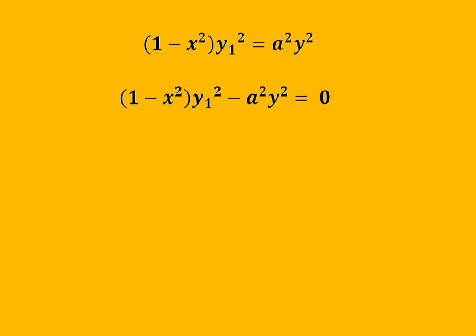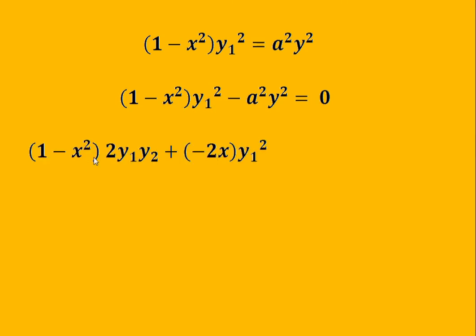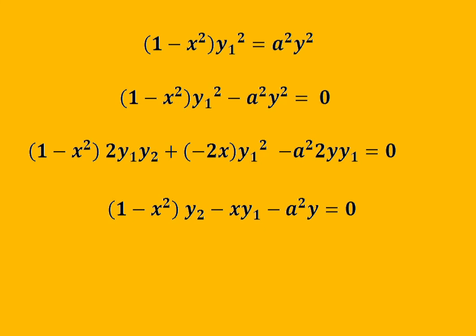Differentiating with respect to x, the first term gives (1 - x²)·2y1·y2 + (-2x)·y1² and the second term gives -a²·2y·y1, all equal to 0. Taking 2y1 as common, this equation becomes (1 - x²)·y2 - x·y1 - a²·y = 0. This is the relation between y2, y1, and y.